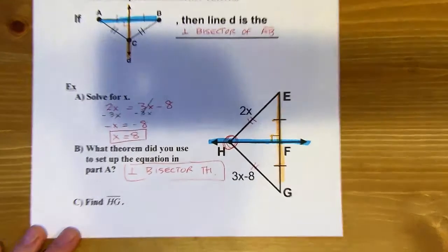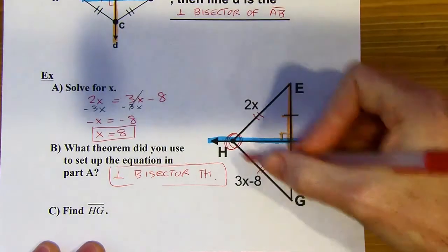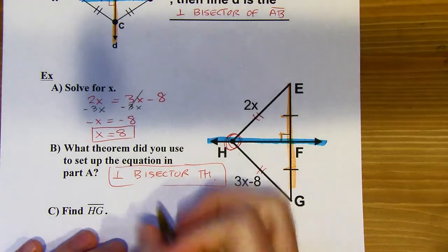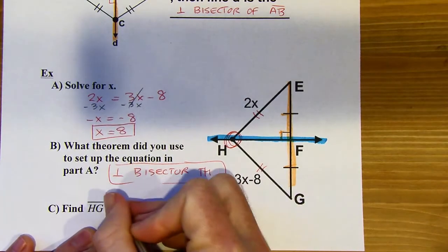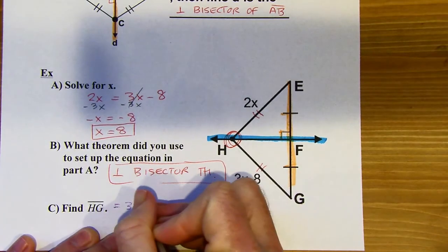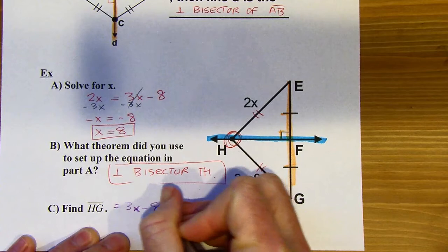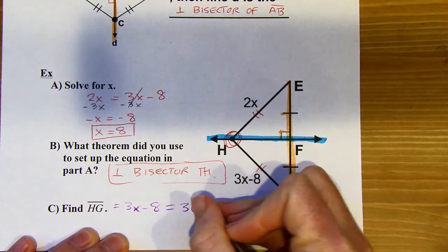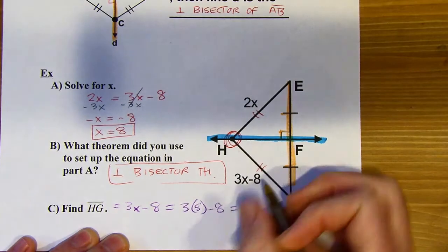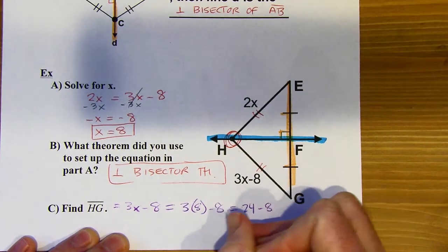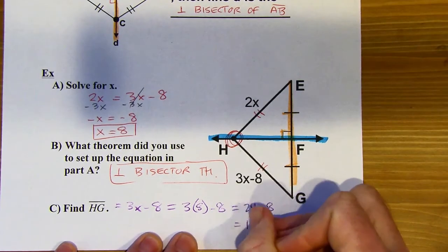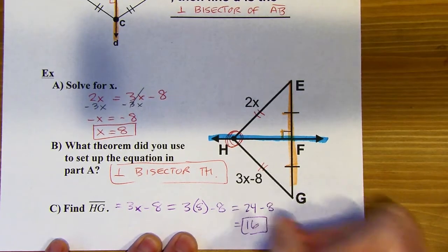Now let's find HG. I can see that HG is going to equal 3x minus 8. I've already solved for x in part a — that's 8. So 3 times 8 is 24, minus 8 is 16. So 16 is the length of HG.